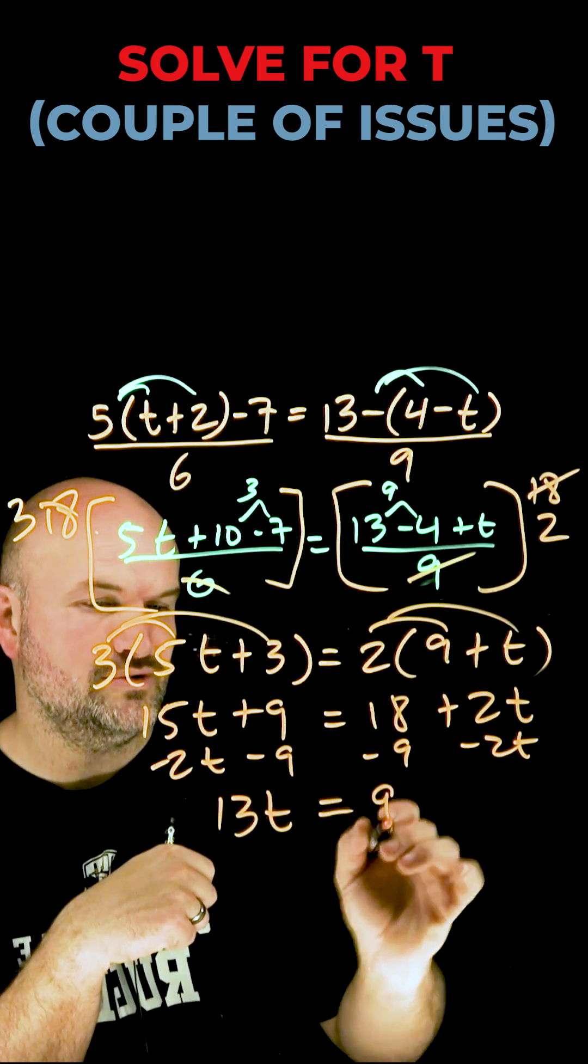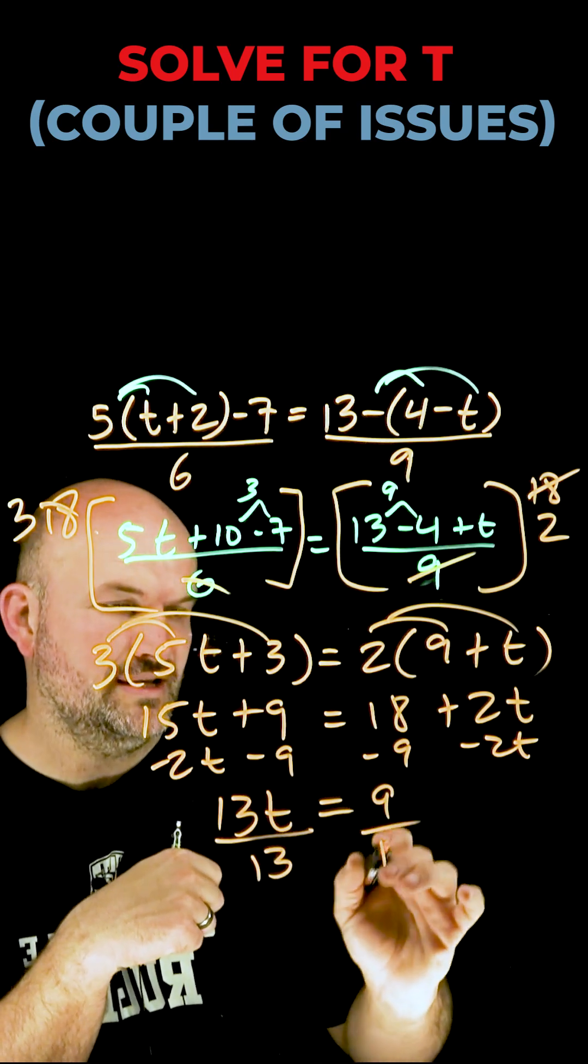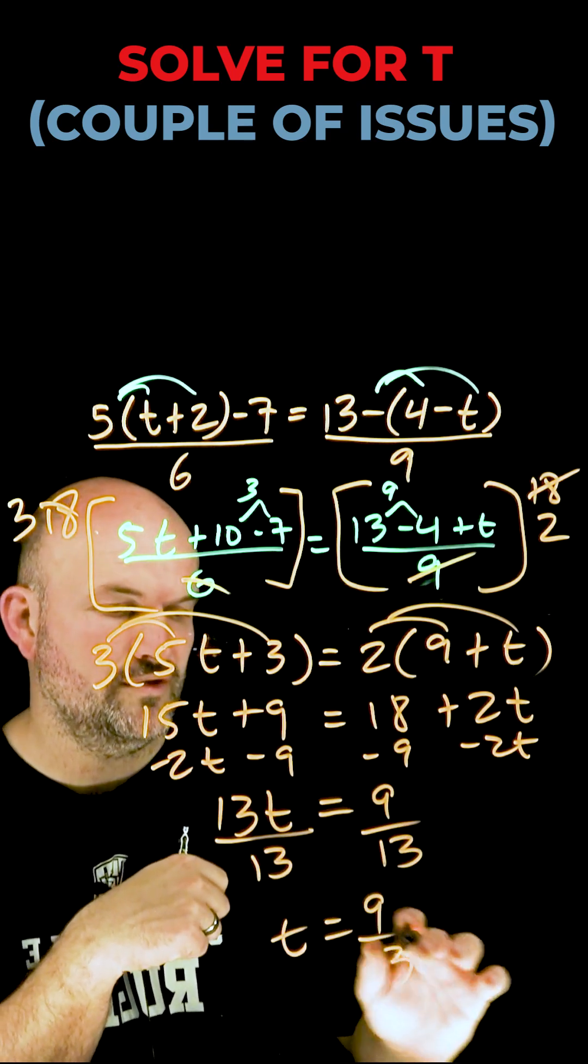That's going to leave me with a 13t is equal to a 9. Divide by 13. Divide by 13. T is equal to 9 over 13.